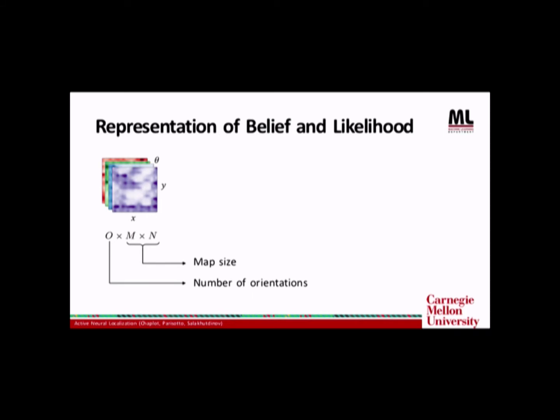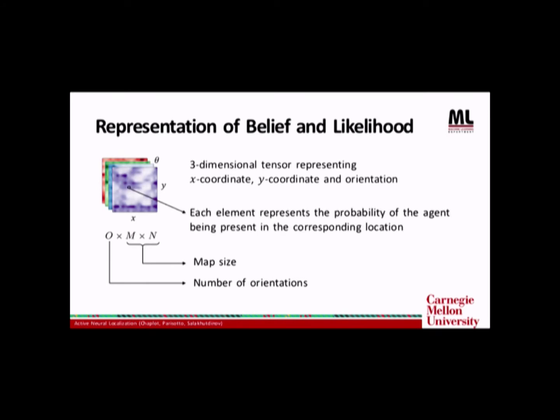So the location of the agent is discretized. Let O be the number of orientations and M cross N be the map size after discretization. And the belief and likelihood are represented using a three-dimensional tensor where each element represents the probability of the agent being in that corresponding location.